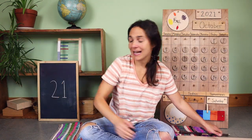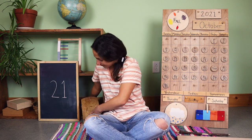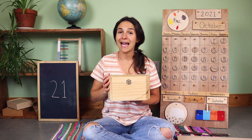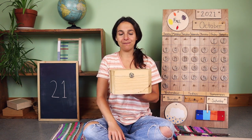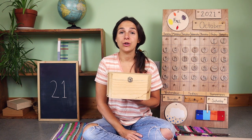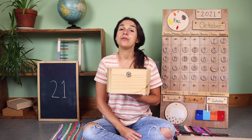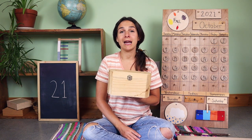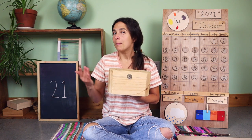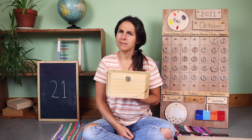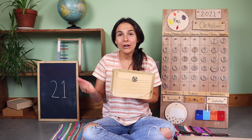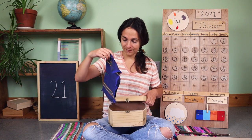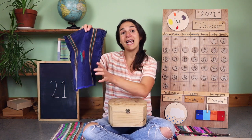I wonder what we'll find inside of the letter box today. I know that it's something that starts with the letter N. Here's your first clue — this is something that you use when you're eating dinner. You can use it to clean your hands or wipe your mouth. Usually it's made out of cloth, but sometimes it's made out of paper. What could it be? Let's take a look. This is a napkin.